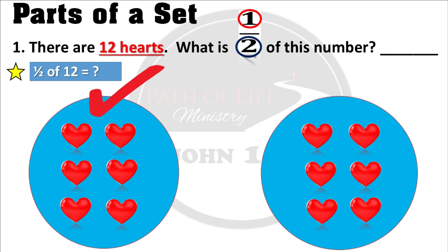After selecting the group, count the number of objects within that group. Let's count: one, two, three, four, five, six. We have six hearts in this one group. So the answer is: half of 12 is equal to six hearts.